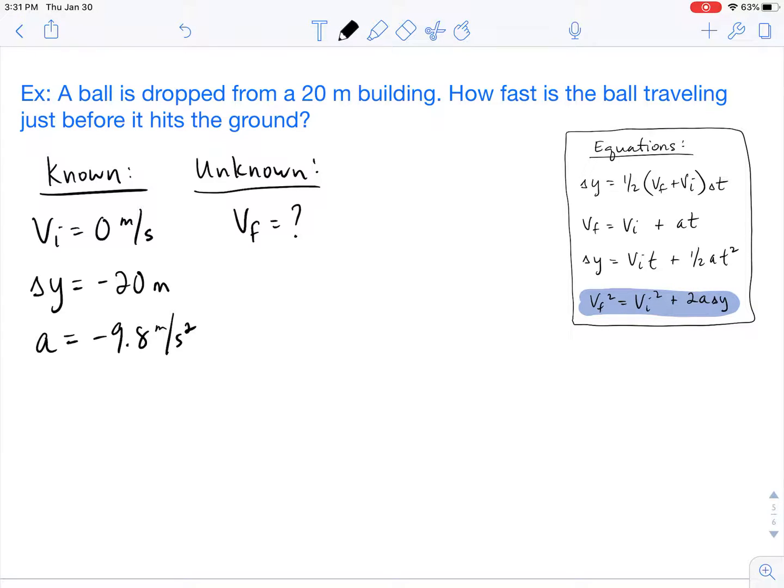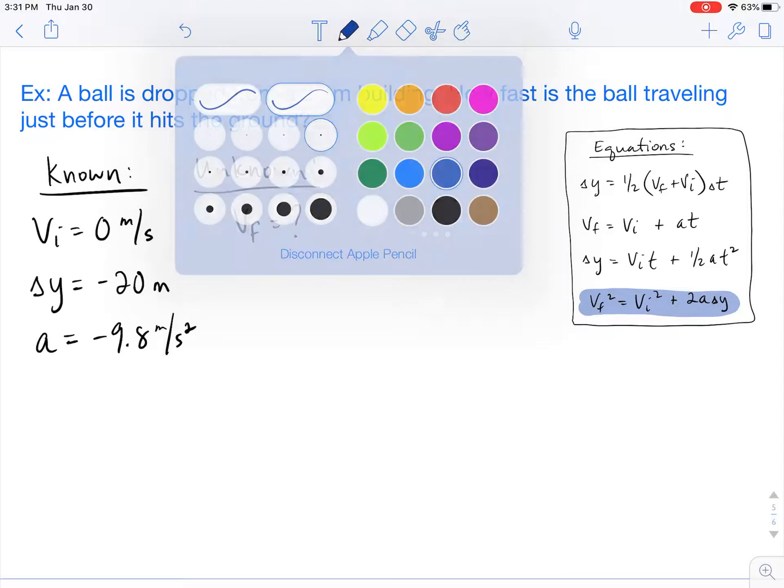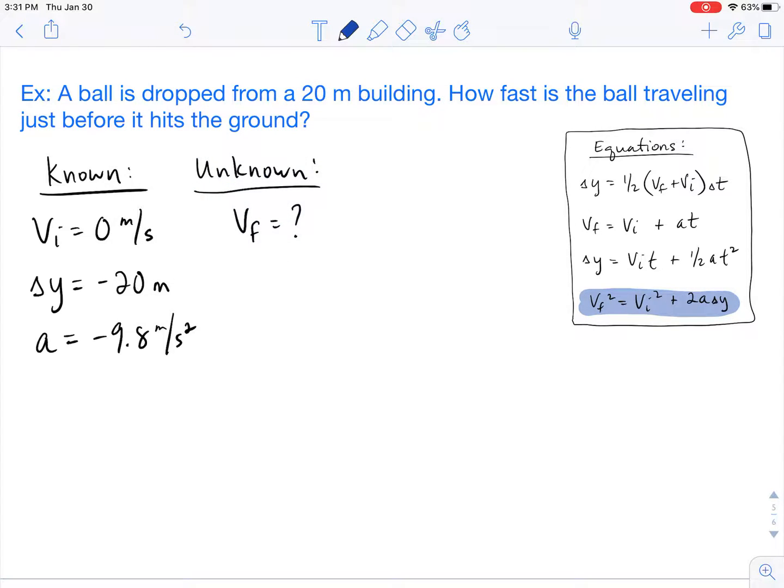So at this point, it's just a matter of plugging in the right values. So VF squared, VF is our unknown, is going to equal VI squared, VI is 0, plus 2 times the acceleration times the height.